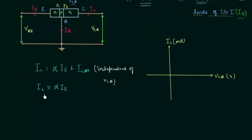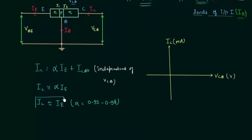We can consider the collector current IC nearly equal to the emitter current IE, because alpha ranges from 0.95 to 0.98, which is nearly equal to 1. So the output current is affected tremendously by the input current.